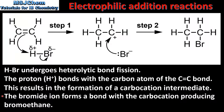In the second step of the mechanism, the bromide ion forms a bond with the carbocation, producing bromoethane. The bromide ion uses one of its lone pairs of electrons to form a bond with the carbocation. This is shown by this curly arrow which shows the formation of a bond between the carbocation and the bromide ion. On the right we have the structure of the product, which is bromoethane.